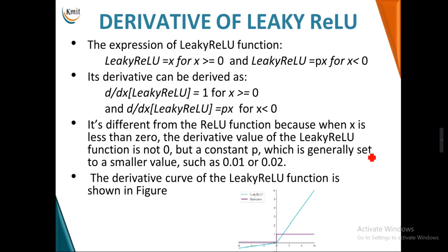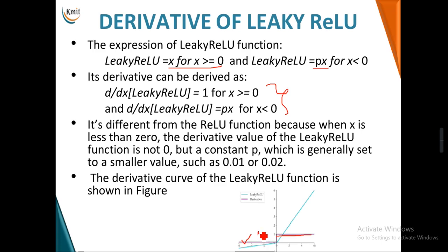Leaky ReLU is a small modification of ReLU. It outputs x for all positive values and a small fraction of x for negative values. When you calculate the derivative of leaky ReLU, for positive values it retains 1, same as ReLU. Unlike ReLU, leaky ReLU does not hold zero as its derivative on the negative side; instead it holds a small value p, typically around 0.01 or 0.02.